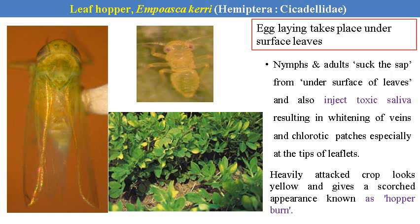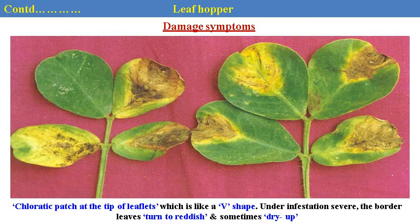Another pest is the leaf hopper. Egg-laying takes place under the surface of the leaves. Nymphs and adults suck the sap from the undersurface of the leaves; injection of saliva results in whitening of the veins. Chlorotic patches appear especially at the tip of the leaflets. Heavily attacked crops show yellowing and a scorched appearance known as hopperburn symptom, as seen in cotton or tea. Leaf hopper damage resembles attack of fungal V-shaped blight; chlorotic patches at the tip of leaflets can be visualized as V-shaped under severe infestation, and the border of leaves turn reddish or dry.